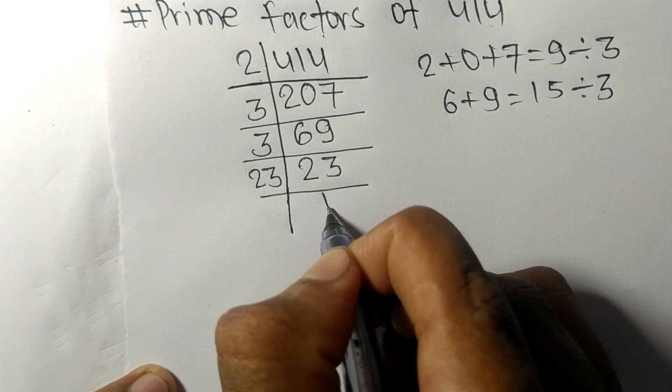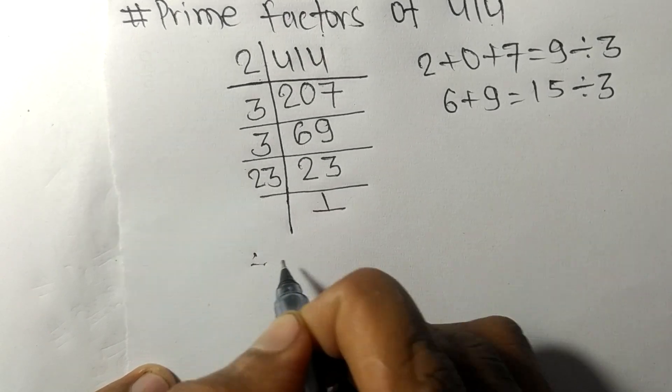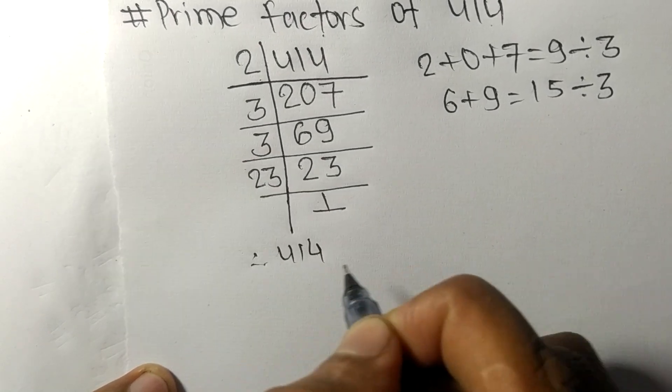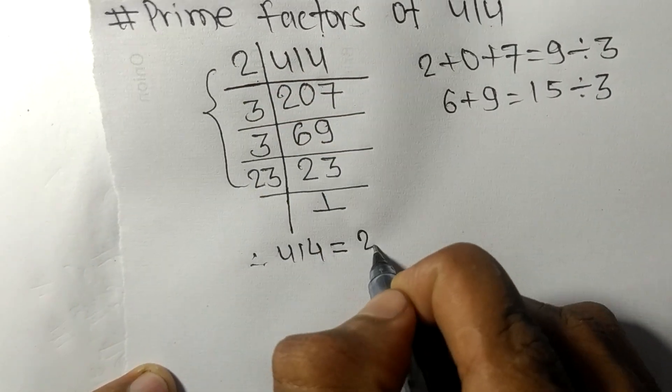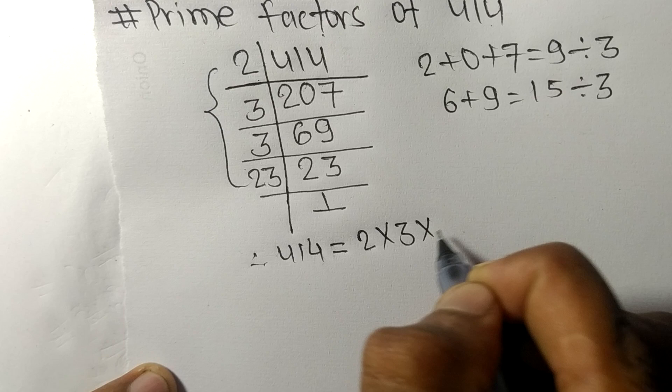Therefore, 414 equals 2 times 3 times 3 times 23.